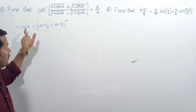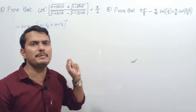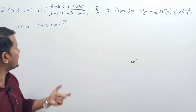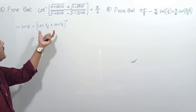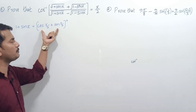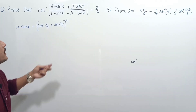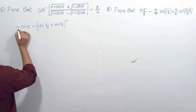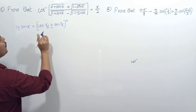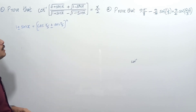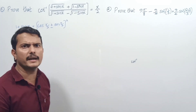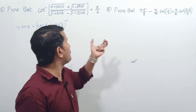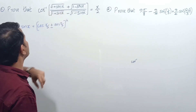So wherever 1+sinx appears, we replace it with (cos(x/2) + sin(x/2))², and 1-sinx will be replaced by (cos(x/2) - sin(x/2))². That is what we are going to apply in this case.